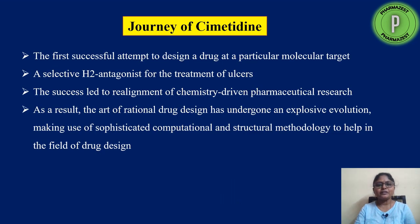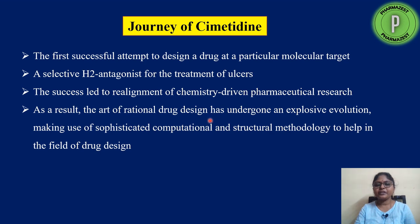Now coming to the story of Cimetidine. It was the first successful attempt to design a drug at a particular molecular target. Previously drug discovery was based on serendipity or traditional medicine, but Cimetidine discovery was targeted at a specific molecular target — the histamine molecule — making it a selective H2 antagonist for the treatment of ulcers. This success story led to the realignment of chemistry-driven pharmaceutical research and an explosive evolution in rational drug discovery and design using sophisticated computational and structural methodology.